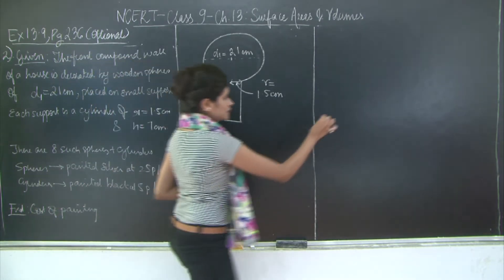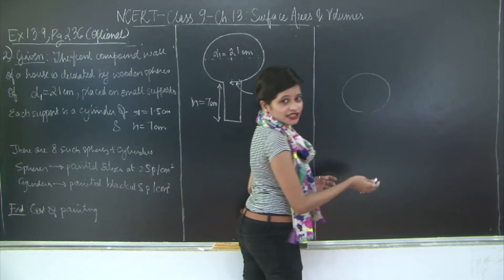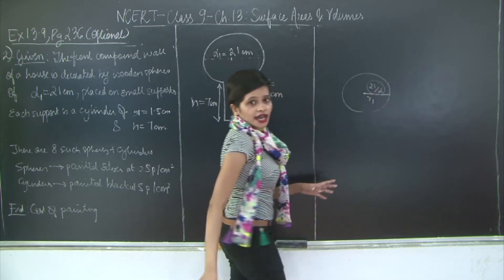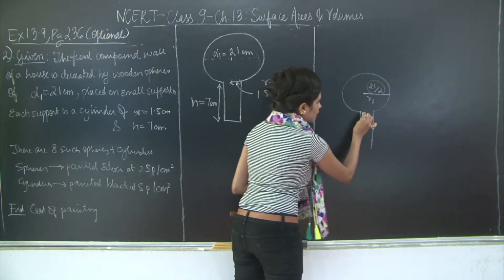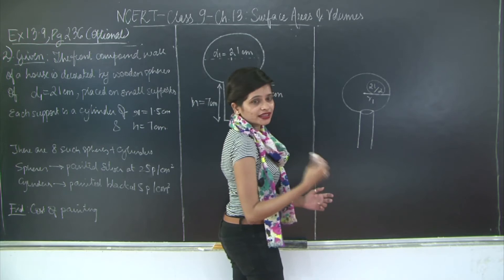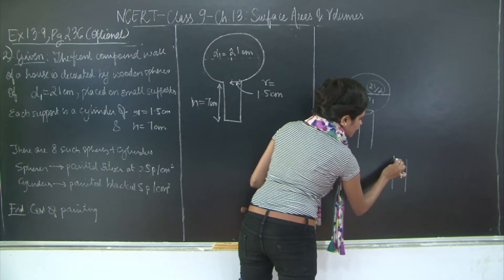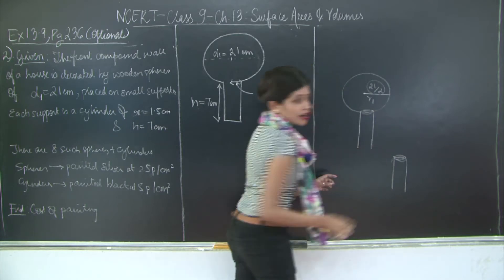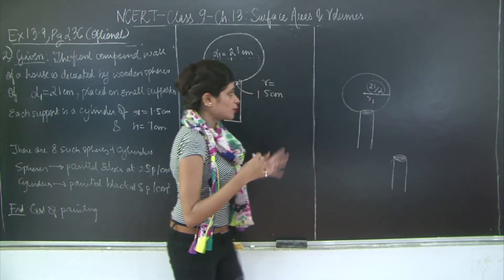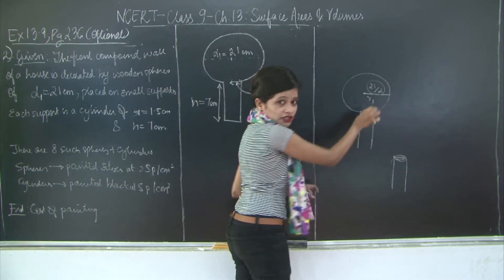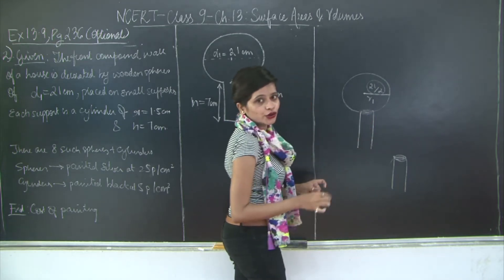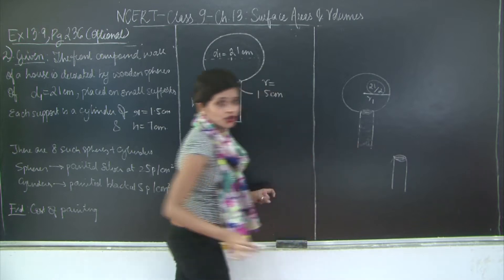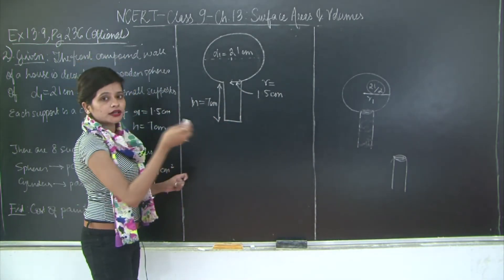There is a small twist here. The spheres have diameter 21 centimeters, so radius R1 = 21/2. Since the spheres are mounted on cylinders, the section where the cylinder meets the sphere is not visible — it is a circle of radius 1.5 cm. So we will not consider that area. The external surface area of the sphere equals the total surface area of the sphere minus the circular area of the cylinder base, which is πr². The curved surface area of the cylinder is 2πrh.